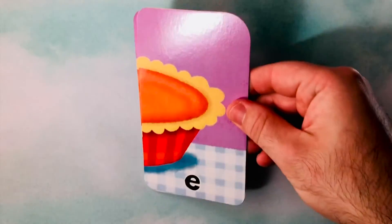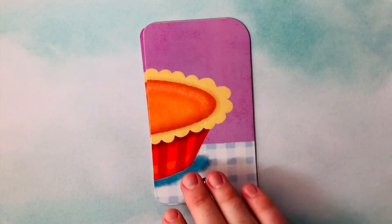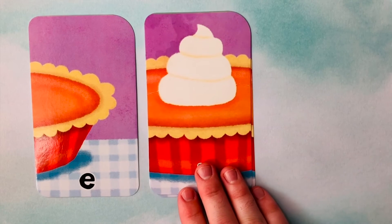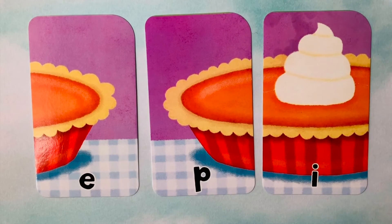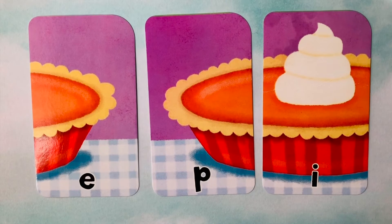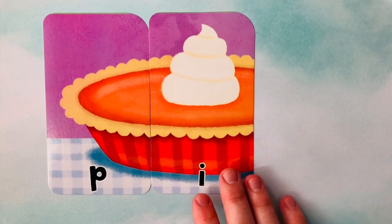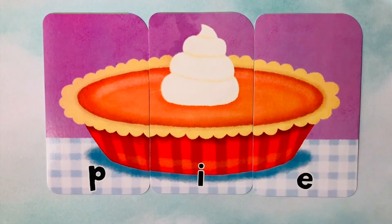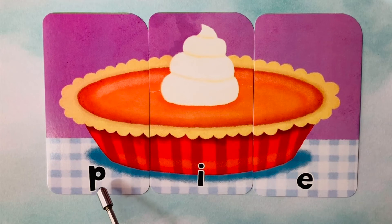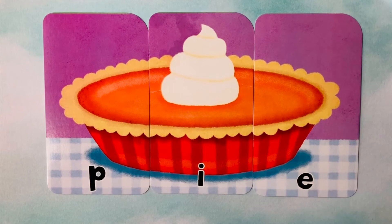We have time for one last word. Our very first letter looks to be an E. We also have an I. And our third letter is a P. I think we're trying to spell the word pie. Pie starts with a P, follows with an I, and finishes with an E. P-I-E spells pie.